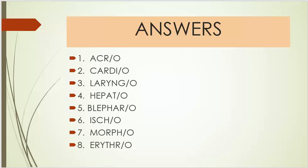Number eight, red. Answers: Number one is acro, number two is cardio, number three is laryngeal, number four is hepato, number five is blefero, number six is isco, number seven is morpho, number eight is erythro.